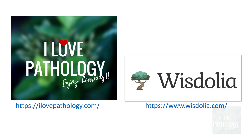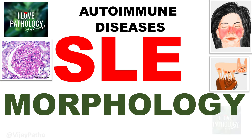Hello everyone, welcome back to this short tutorial from Pathology Made Simple at ilowpathology.com, supported by Vizdolia, an amazing AI study tool. At the end of this session you will have practice sessions via Vizdolia. In continuation with the autoimmune diseases series, we were talking about SLE. We had discussed the autoantibodies and pathogenesis and mechanisms of tissue injury in SLE. Now let us learn about the various morphological features of SLE.